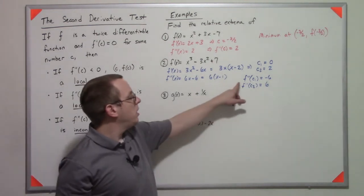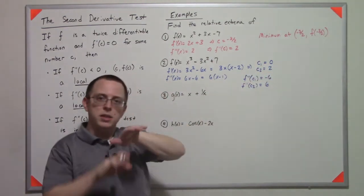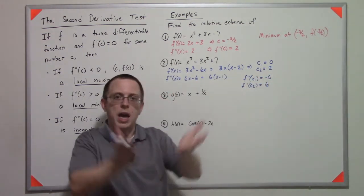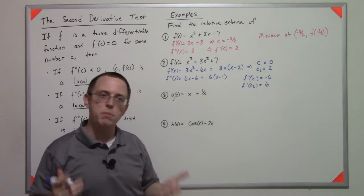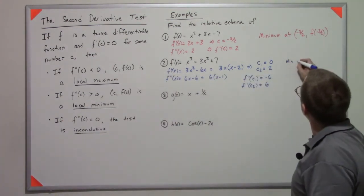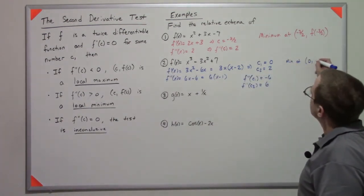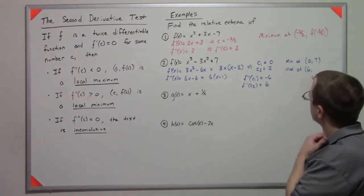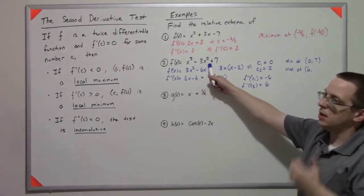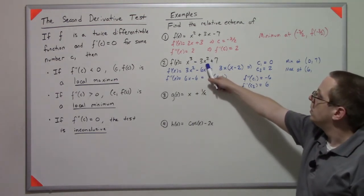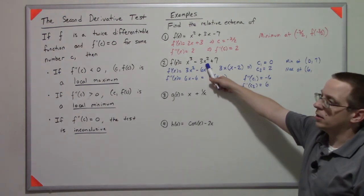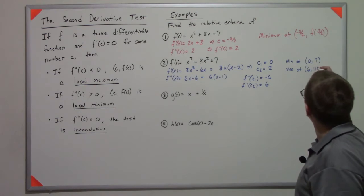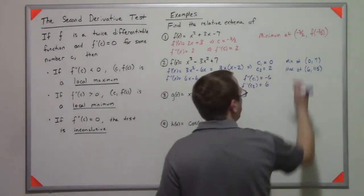So what that tells me is that at this point, since it's concave down, that must be a relative maximum. At this point, since it's concave up, it must be a relative minimum. So what would that be, like 216 minus, what is that, 108? So that becomes 108 plus 7, something like that. Again, the x values are kind of what's important here.